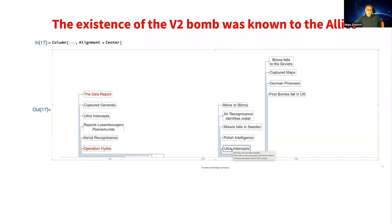Bletchley Park kept collecting information on this initiative. They could decode messages about key components of the program and obtained serial numbers. Based on analysis of serial numbers, they could estimate the number of rockets in stock. As the Soviets were moving west, Blizna fell to the Soviets. British intelligence tried to go there and asked to take the materials — the Soviets said they would send them, but that never arrived. Everything was confiscated by the Soviets.